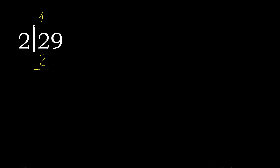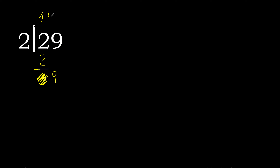Subtract. 0. 9. Eliminate 0. 2 multiplied by 5 is 10, excessive. 2 multiplied by 4 is 8.